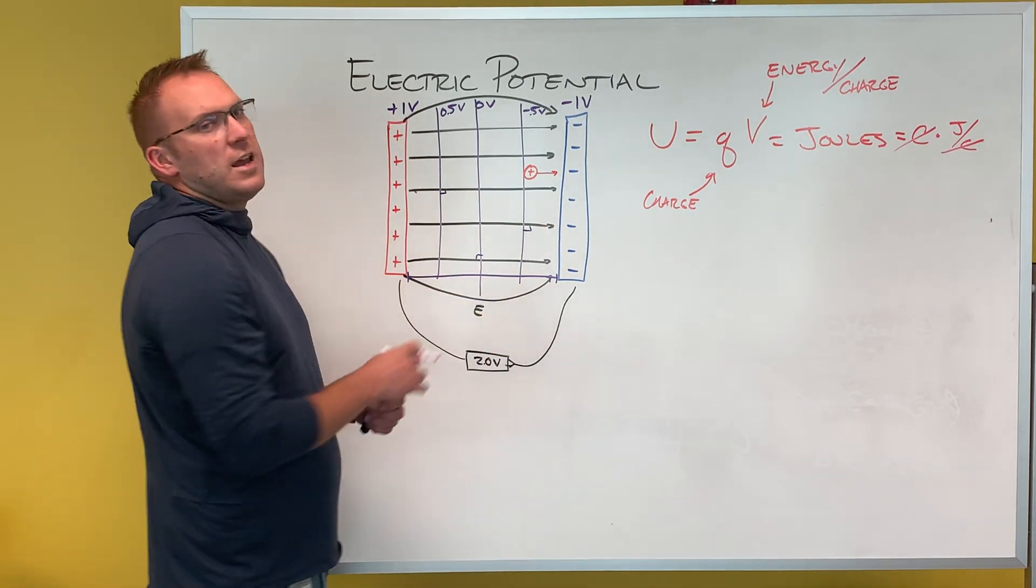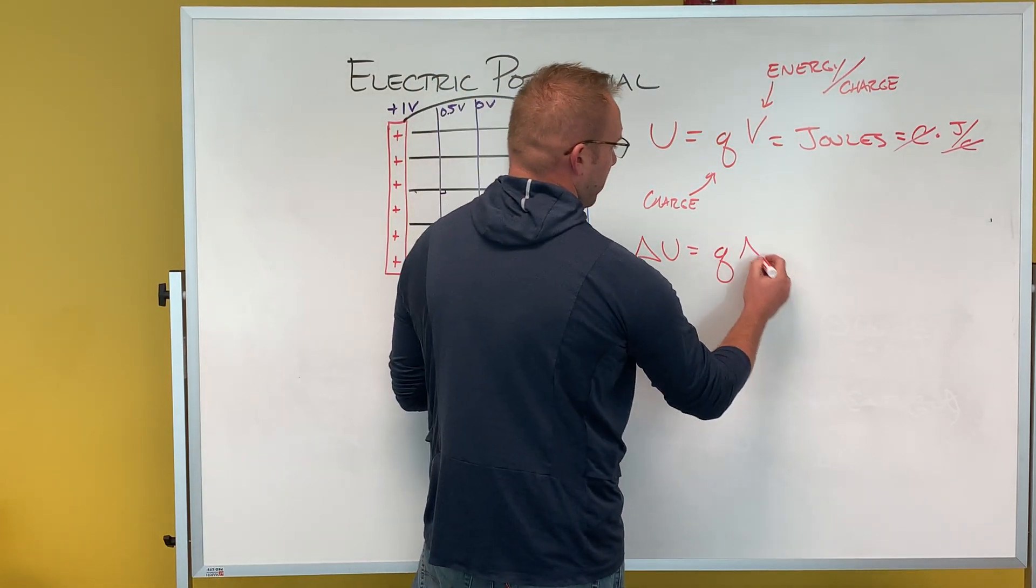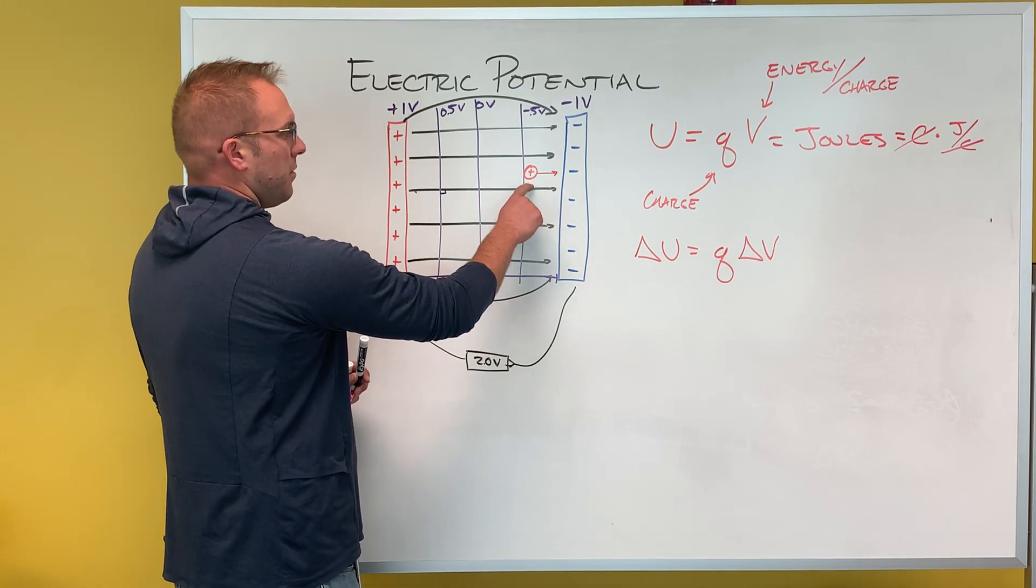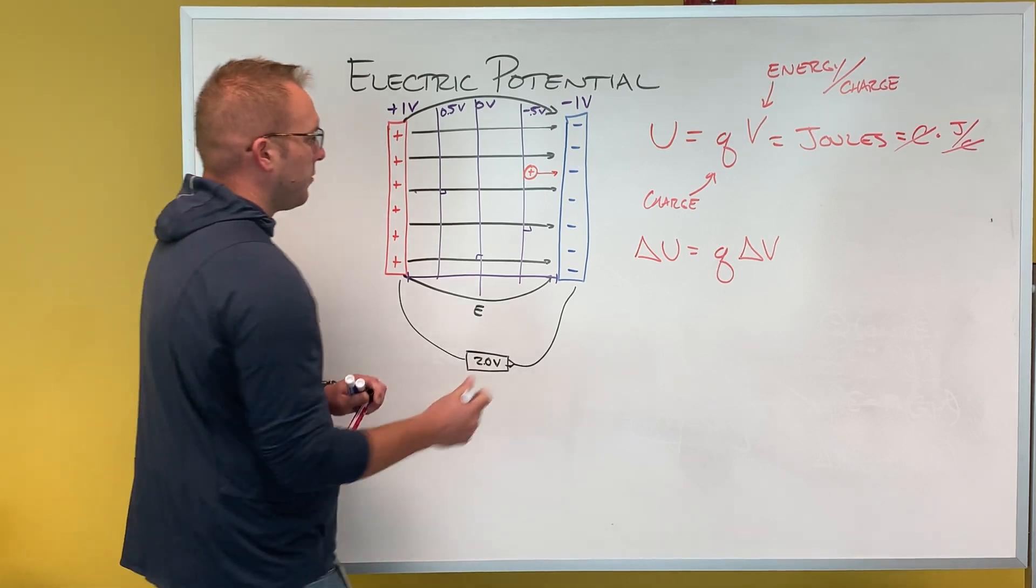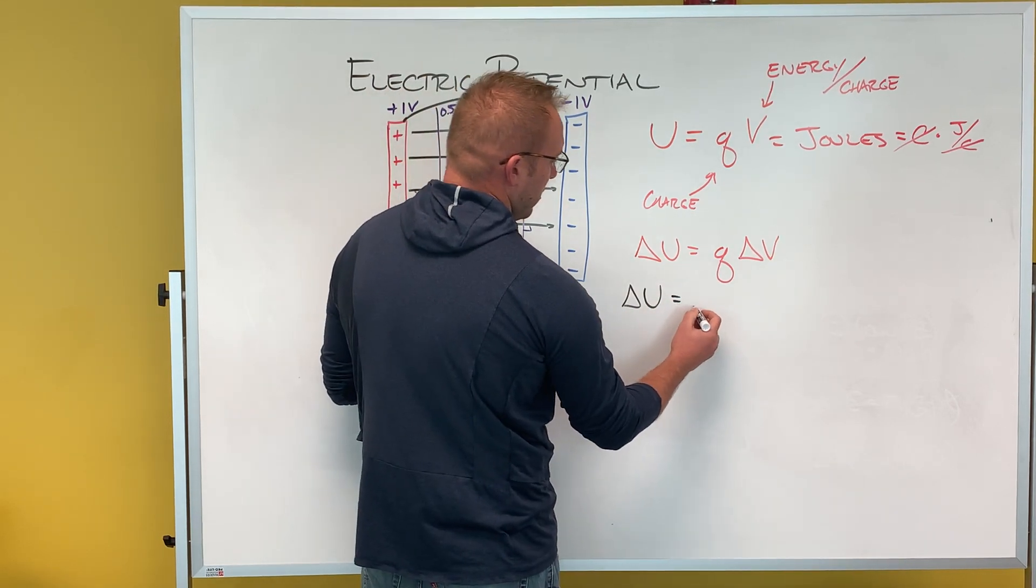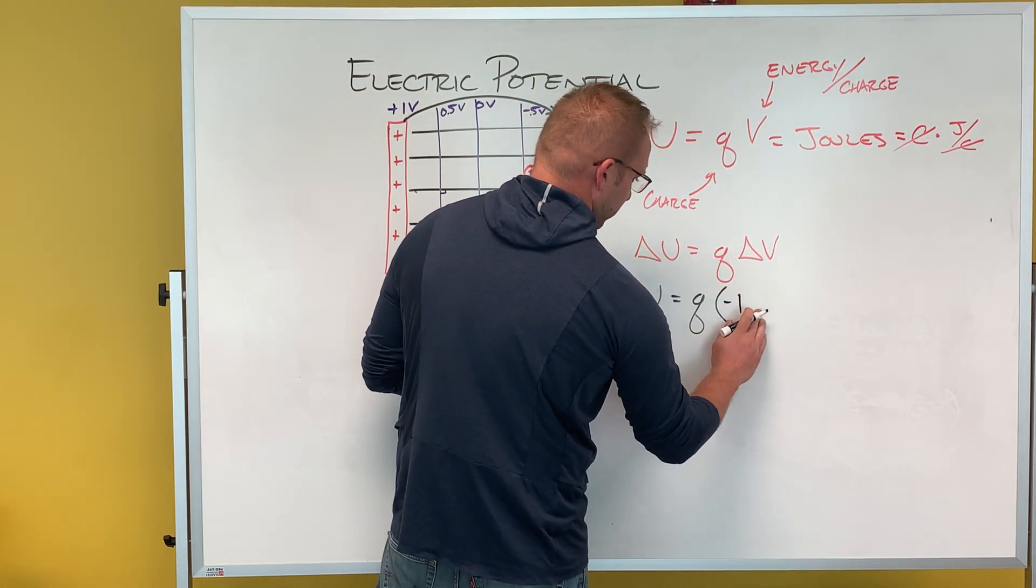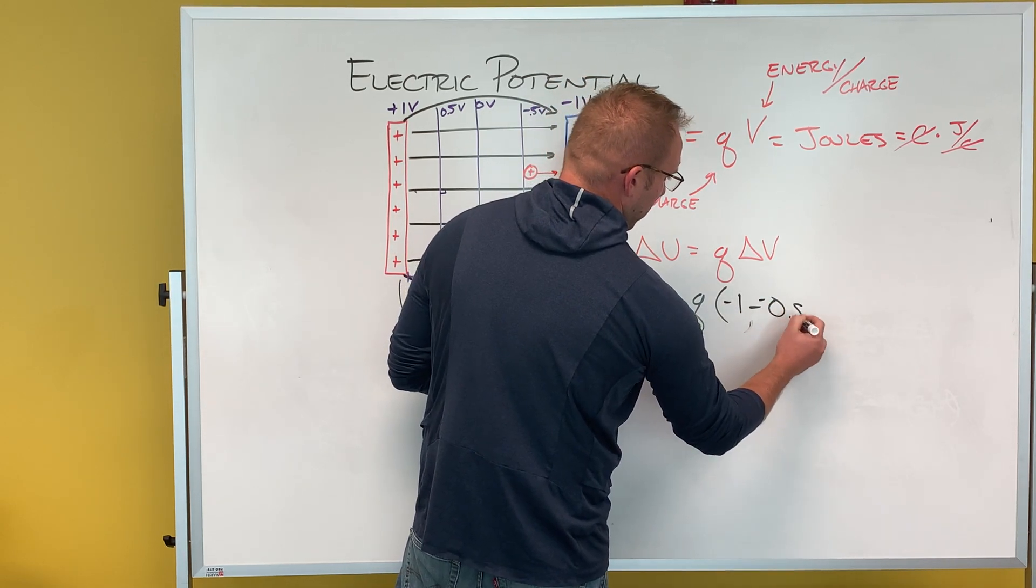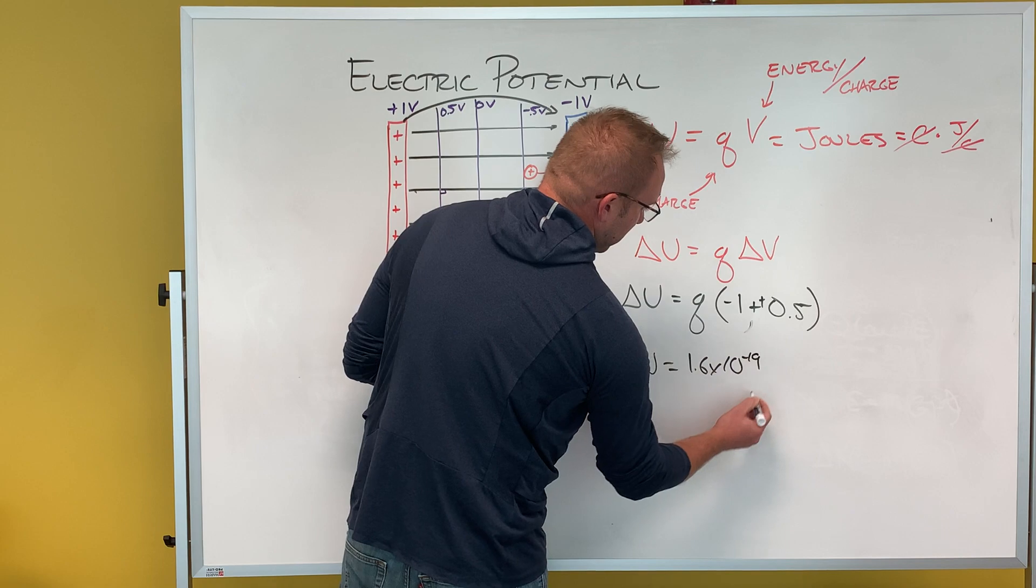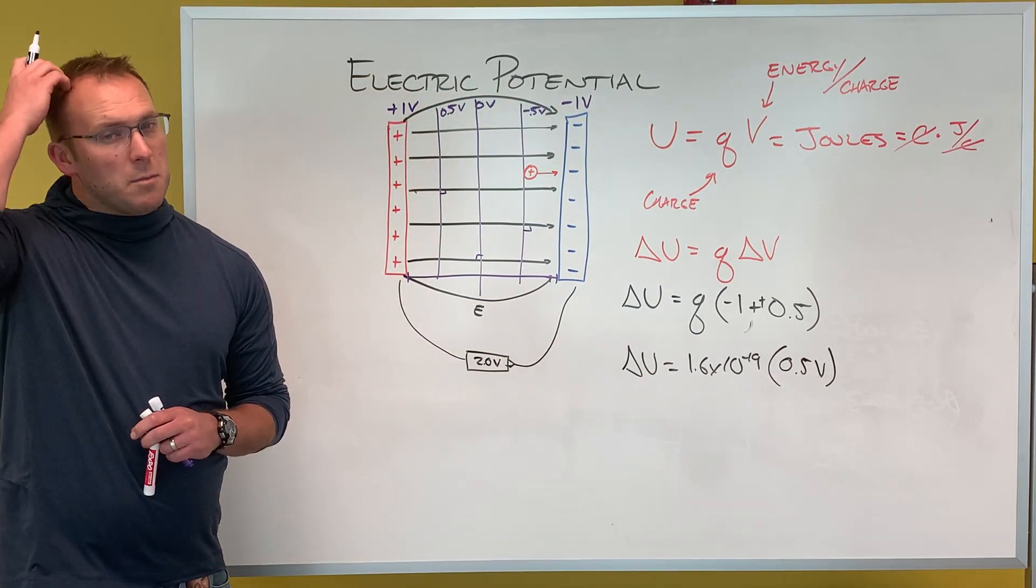So what I can see is what's the change in energy. The equation we're going to use is this: the change in energy equals the charge multiplied by the change in potential. So in this circumstance, the proton is naturally going to go from this position to hitting the negative plate. So my change in energy is going to equal 1.6 times 10 to the negative 19 times 0.5 volts. And that can give me my energy.